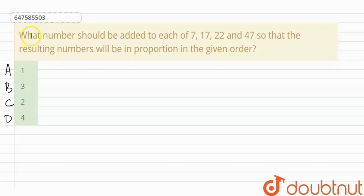Hello everyone! The given question is: What number should be added to each of 7, 17, 22, and 47 so that the resulting numbers will be in proportion in the given order? The options are A: 1, B: 3, C: 2, and D: 4.